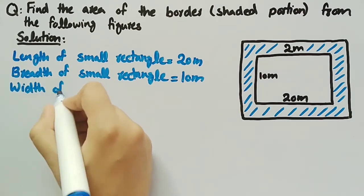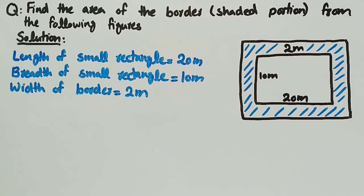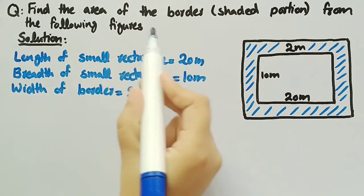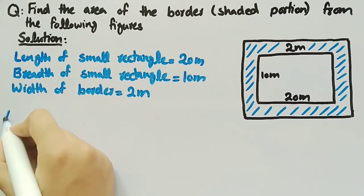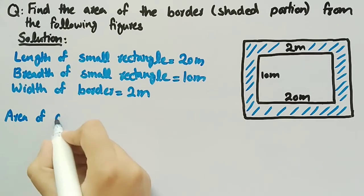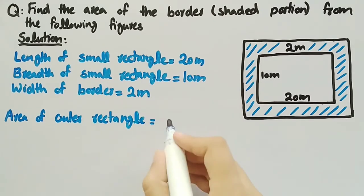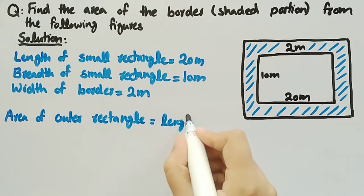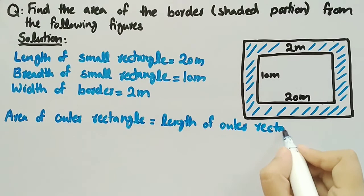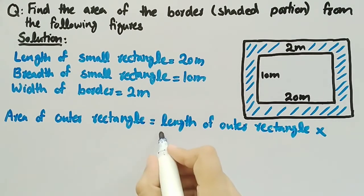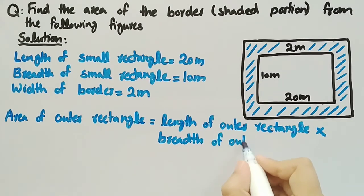To find the area of the border, we need the area of the outer rectangle. The formula for area of outer rectangle is equal to length of outer rectangle multiplied by breadth of outer rectangle.